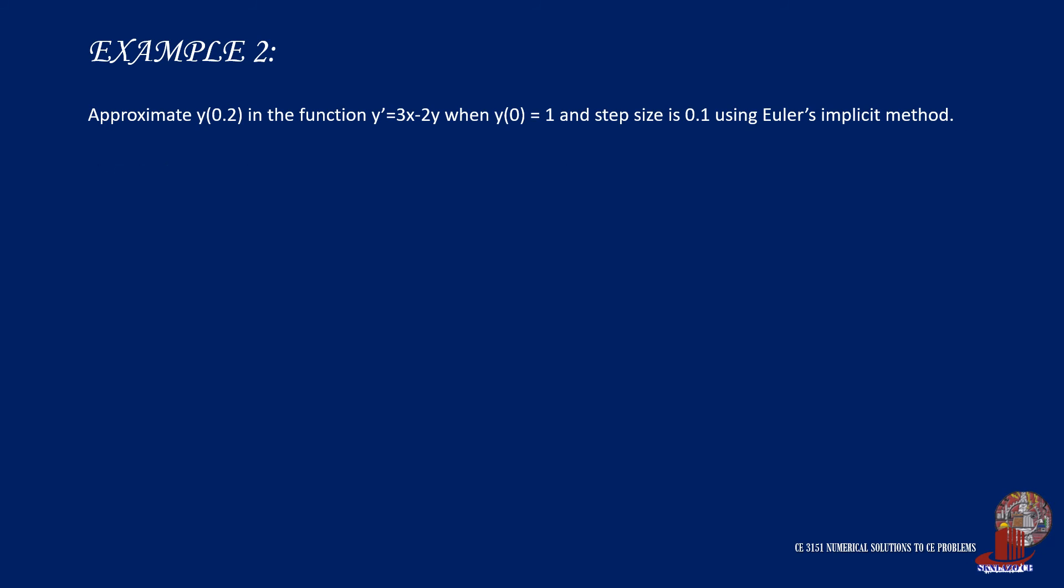Let's start with the iteration from x0 = 0 and y0 = 1. x1 is still x0 + h, which would be 0.1. y1 will be solved using the modified equation, so just plug in the values in the different variables: y0 as 1, h of 0.1, and x1 of 0.1. y1 will then be computed as 0.8417.